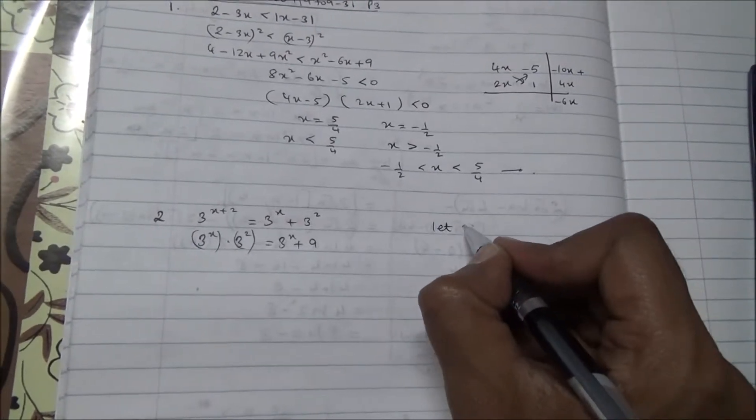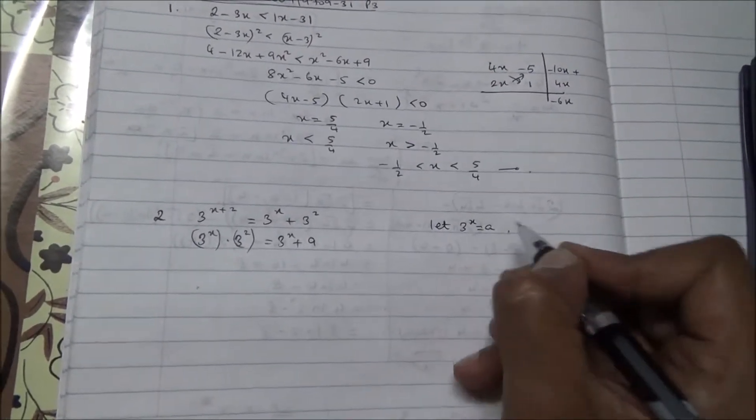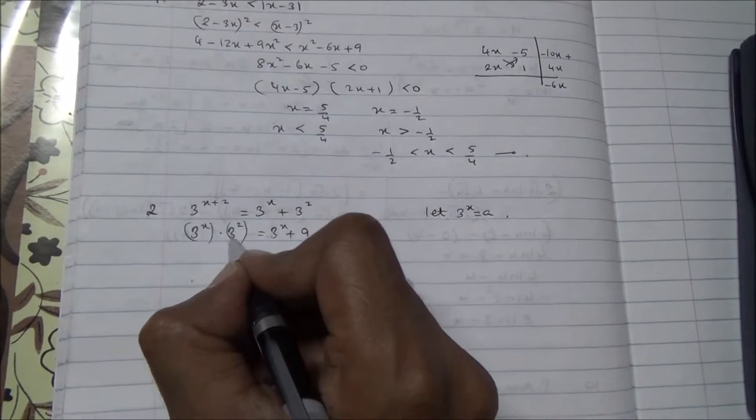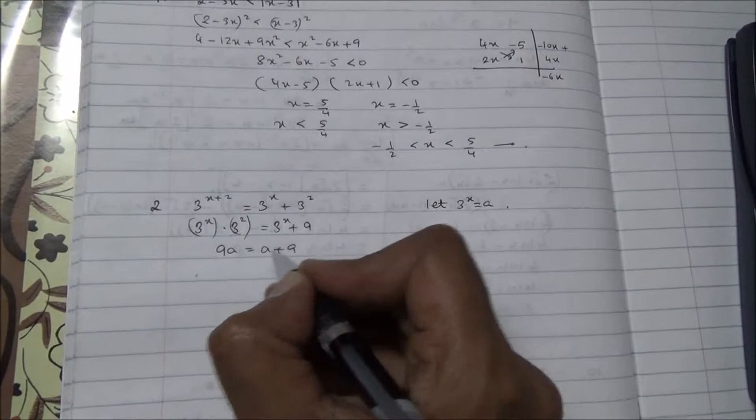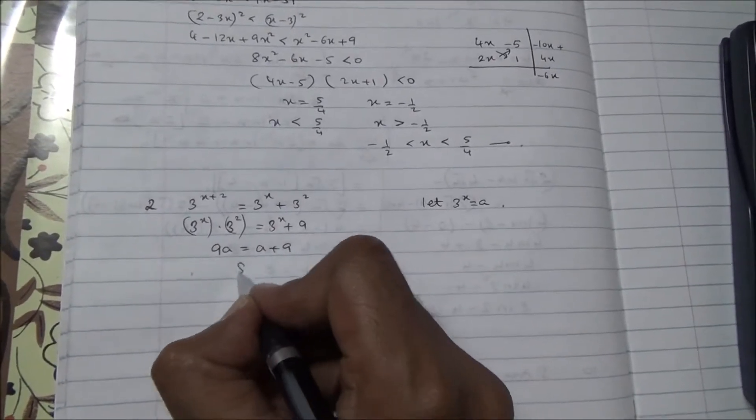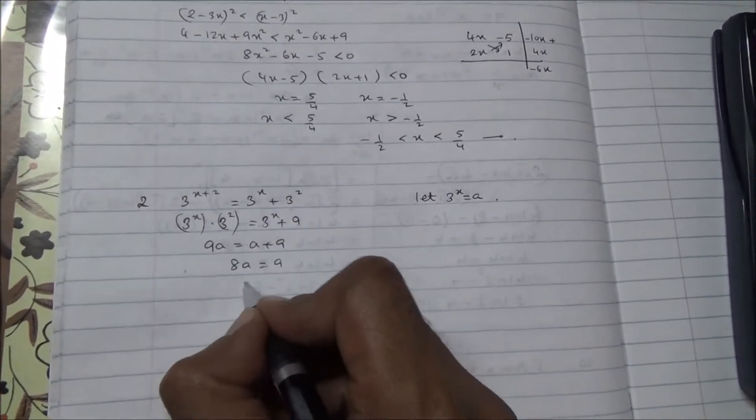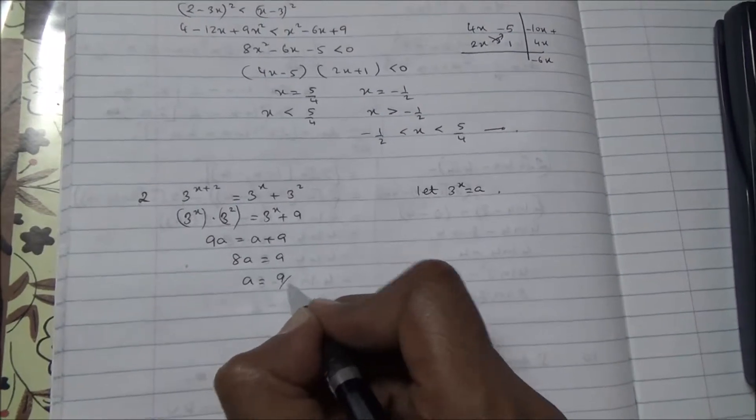We can also say let 3 to the power of x is equal to a. Therefore, we got then 3 to the square, which is 9, times a is equal to a plus 9. 9a minus a is 8, a is equal to 9, and a is going to be 9 divided by 8.